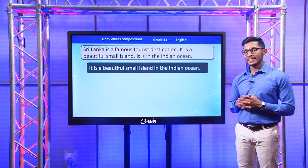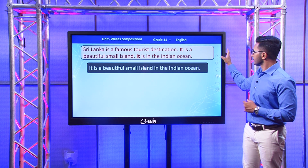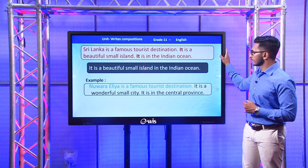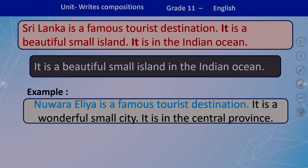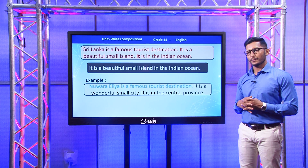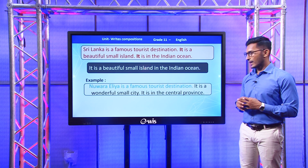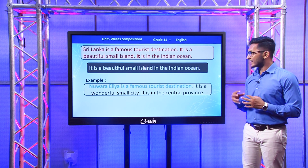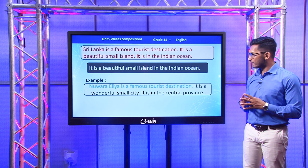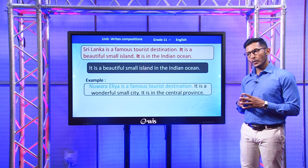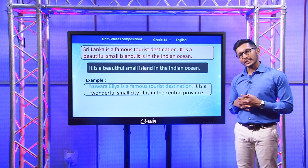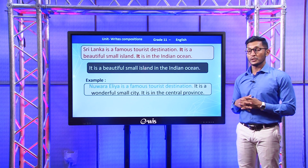Now let's look at another example — here we are describing Nuwara Eliya. Nuwara Eliya is a famous tourist destination. It is a wonderful small city. It is in the central province. Here also we can join the last two sentences. How can you write it? It is a wonderful small city in the central province, or: It is a wonderful small city located in the central province. Superb.